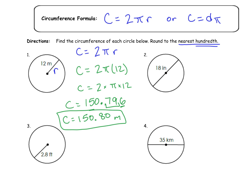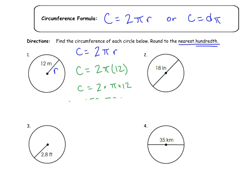Actually, I made an error — I put 2 times pi times 24 in the calculator instead of 2 times pi times 12. Let me correct that. Circumference should actually be equal to 75.398. Looking at 75.39 with the 8 after it — will the 8 round it up? Yes. So circumference is actually 75.40 meters.